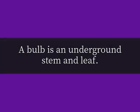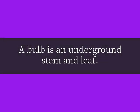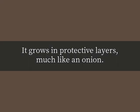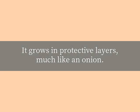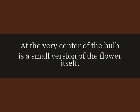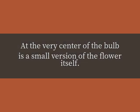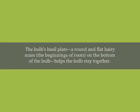A bulb is an underground stem and leaf. It grows in protective layers, much like an onion. At the very center of the bulb is a small version of the flower itself. The bulb's basal plate — a round and flat hairy mass, the beginnings of roots — on the bottom of the bulb, helps the bulb stay together.